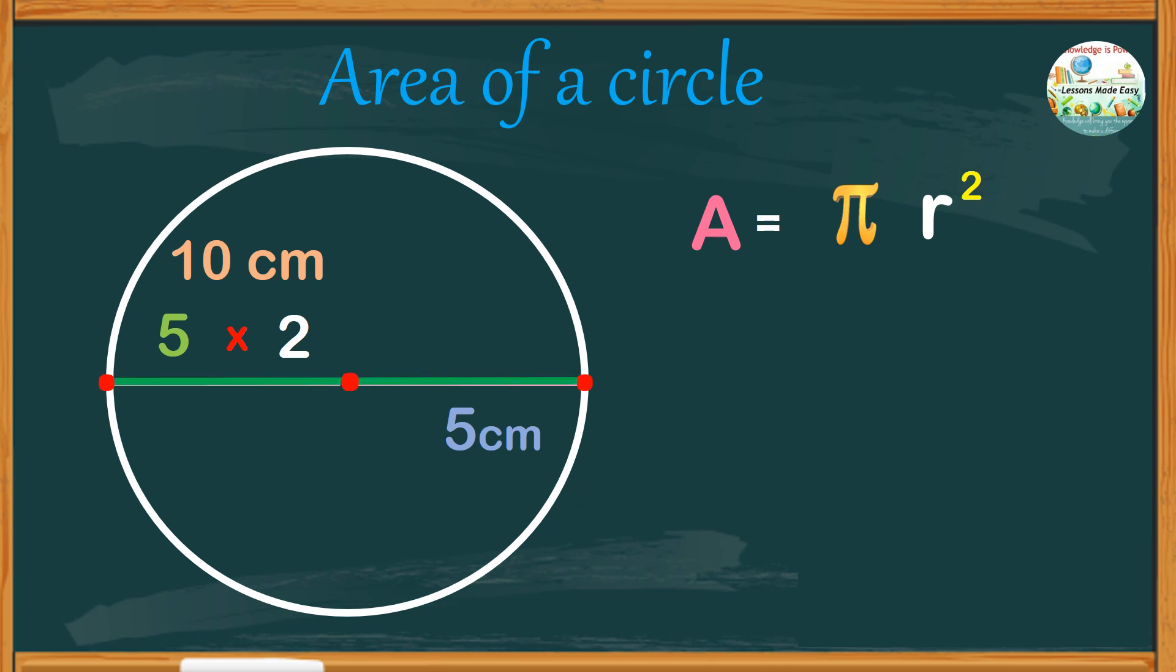On the other hand, r squared means you square the radius by multiplying the value by itself. So if the radius is 5 centimeters times 5 centimeters, we get 25 square centimeters. You see, the answers are totally different.